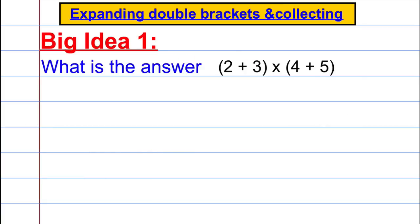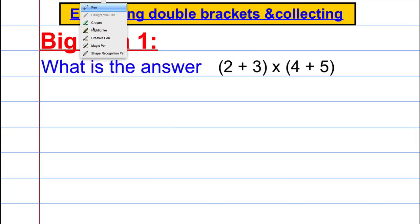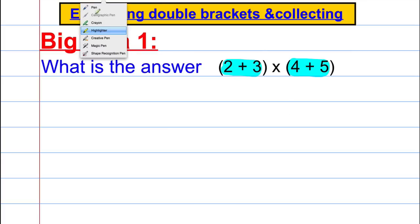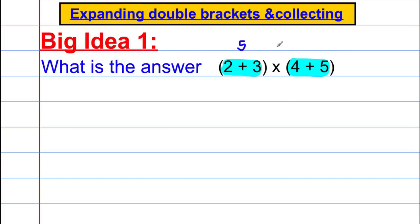Before we go there, let's just talk about a big idea I'm going to use throughout the video. Suppose we were asked to answer the question: in brackets 2 add 3, close brackets, multiplied by brackets 4 add 5. Well, BIDMAS tells us we should do the operation inside the brackets first, giving us 5 multiplied by 9, which is 45.